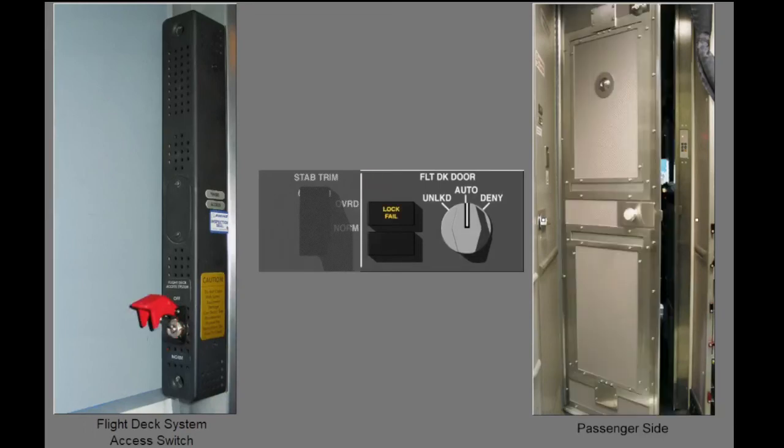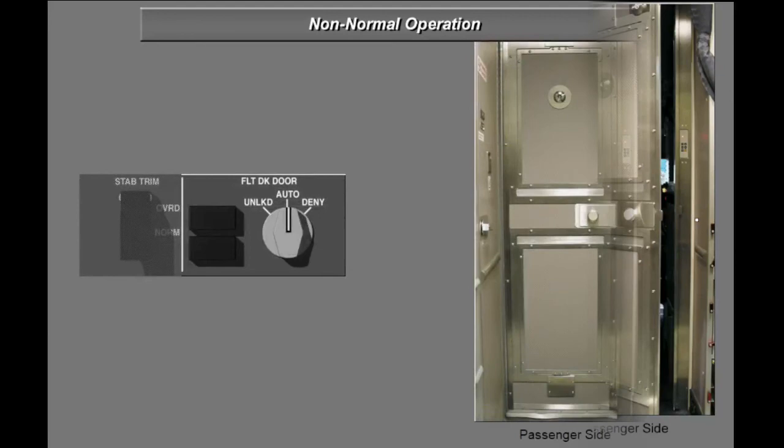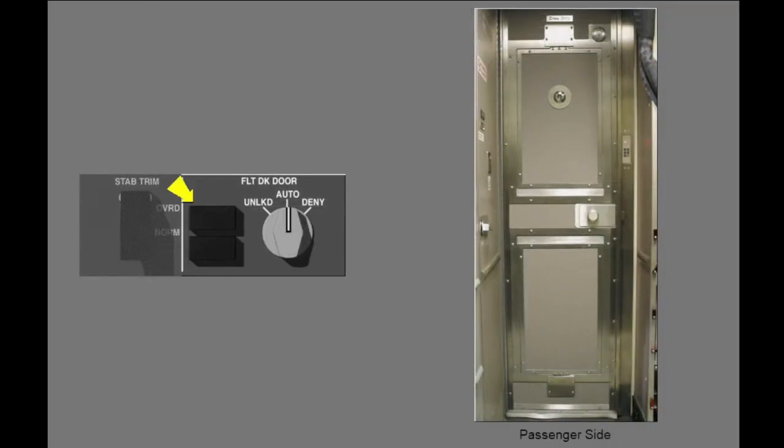When the system access switch is in the off position, the amber lock fail light on the aisle stand illuminates and the door unlocks. If the flight deck door selector is in the auto position and the lock fail light illuminates, it indicates the door lock has failed.